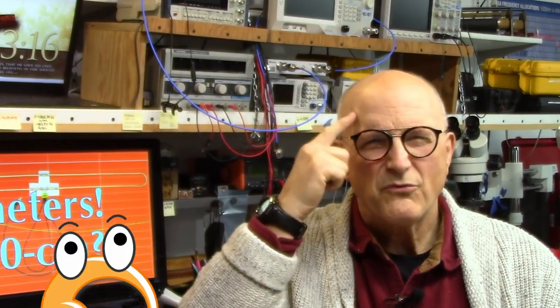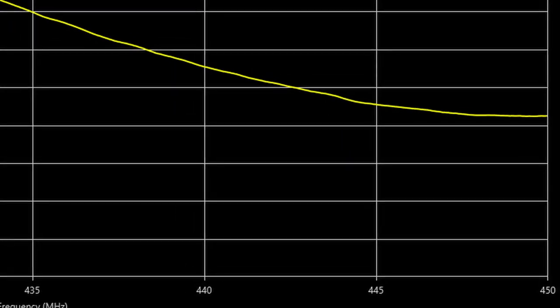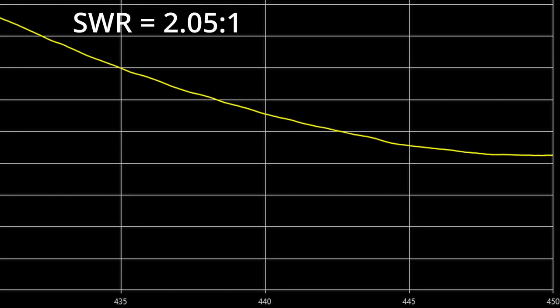But the 70 centimeter band frequencies are 3 times those of the 2 meter band. So it raises the question as to the possible performance on this 70 centimeter band. The sweet spot of the antenna on the 2 meter band is around 147 megahertz. And this would put the potential sweet spot on the 70 centimeter band at around 3 times that or 441 megahertz.